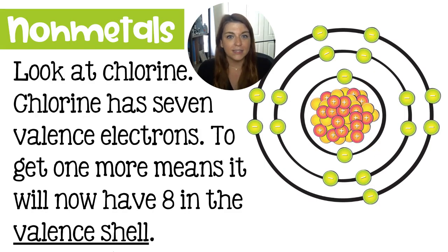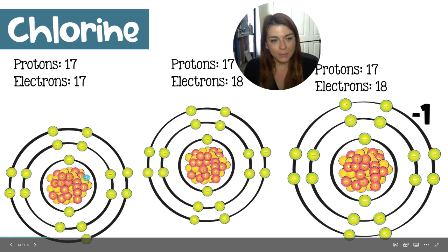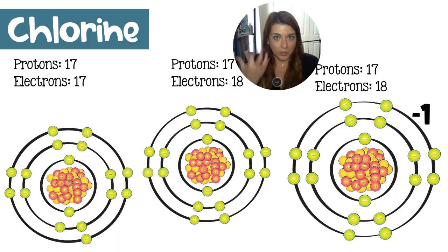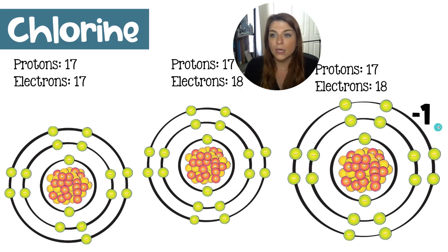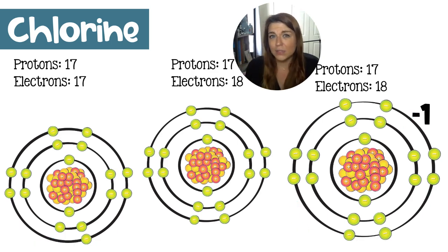We're going to take a look at chlorine as an example for non-metals and how they try to get their eight valence electrons. Chlorine has seven valence electrons, which means it has to gain one more to have the full valence shell. Here we have a chlorine atom — I know it's an atom because it has the same number of protons and electrons, so it's electrically neutral. Then it is going to gain an electron from some other atom. So now it has 17 protons and 18 electrons, which makes chlorine a minus one charge. You can see that it has grown a little bit — it's a little bit bigger.